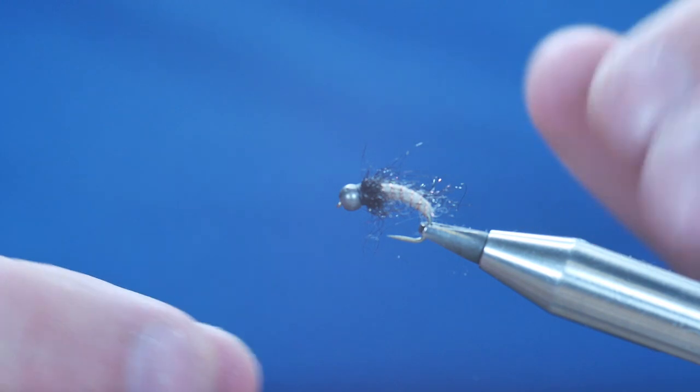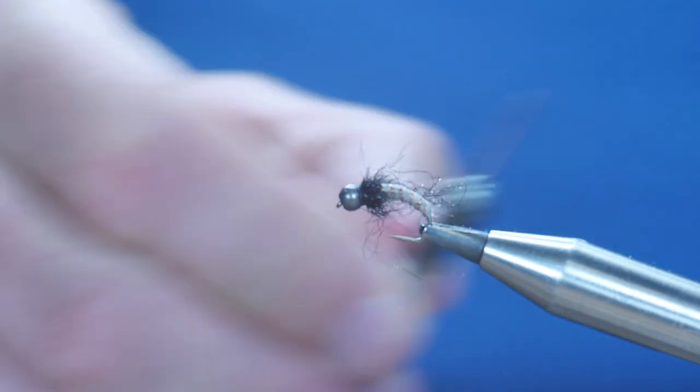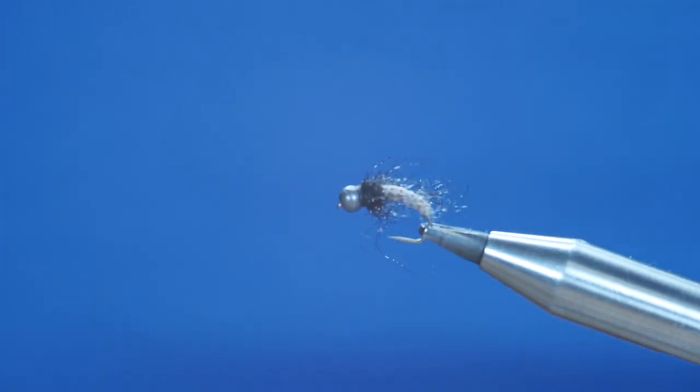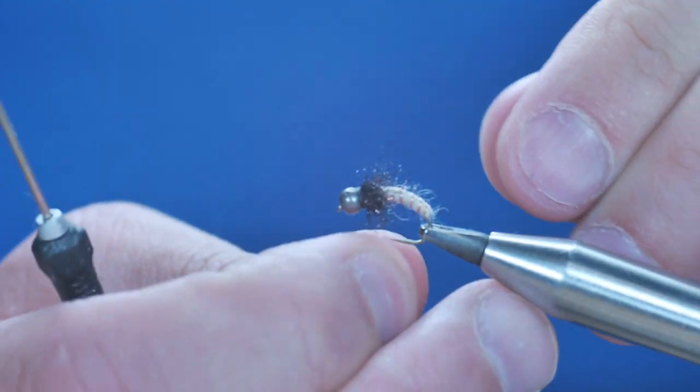Now some people might not be happy that it's too shaggy at the front. Actually, I quite like this stringy look. I just think it's the scruffier the better for trout. But if you're not happy, you can simply come in with your fingers and tidy up a little bit.